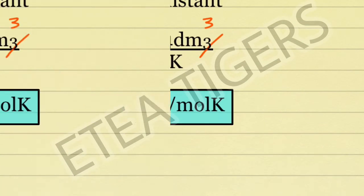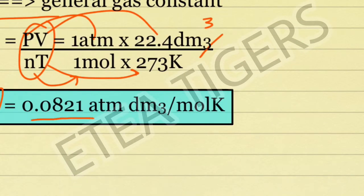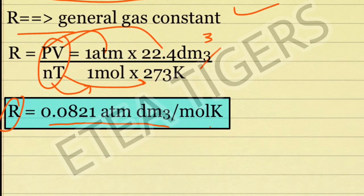Now we have R equals to 0.0821 atm decimeter cube per mol Kelvin, or per mol per Kelvin.